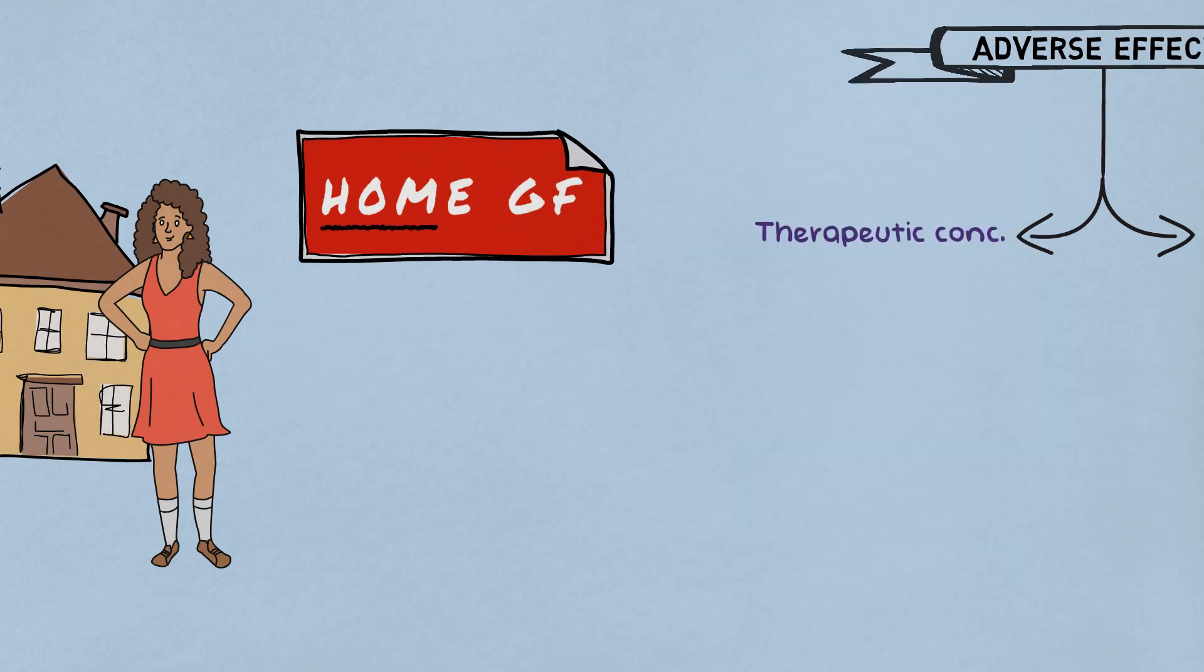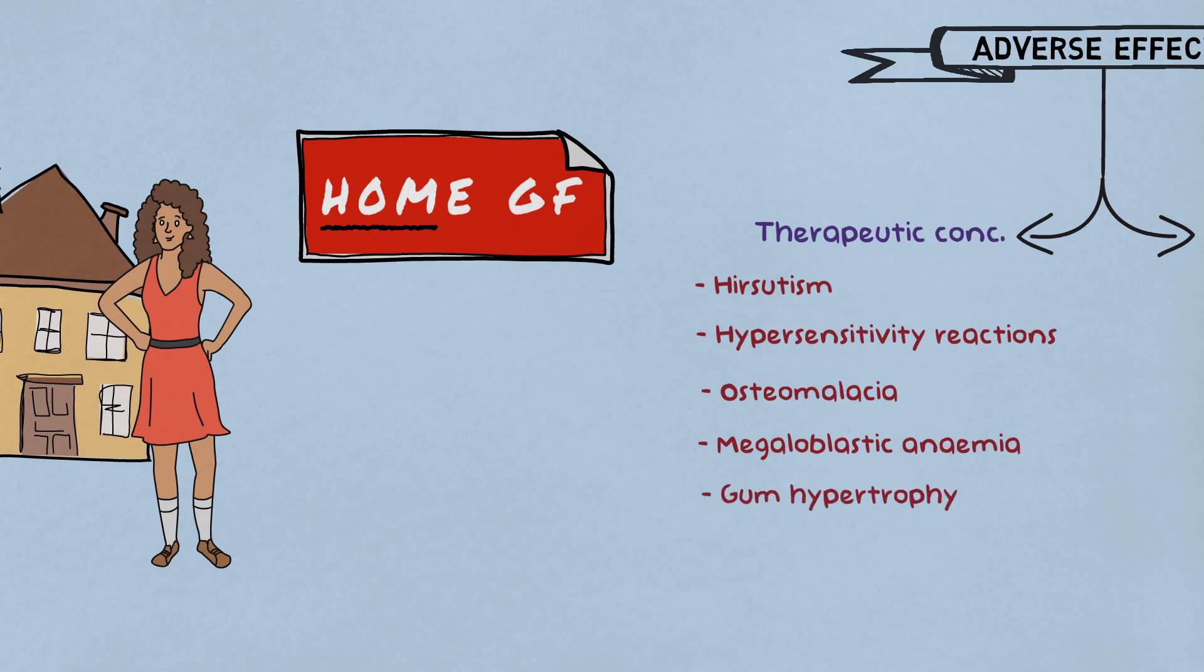WHAT? Just kidding. Actually, it is a mnemonic for adverse effects at therapeutic concentration, where H stands for hirsutism and hypersensitivity reaction, O stands for osteomalacia, M stands for megaloblastic anemia, G stands for gum hypertrophy, F stands for fetal hydantoin syndrome.